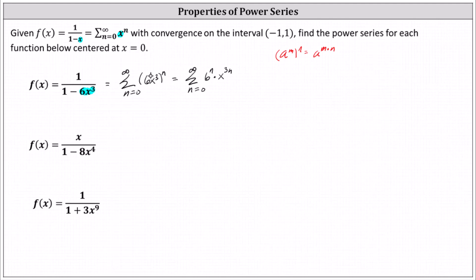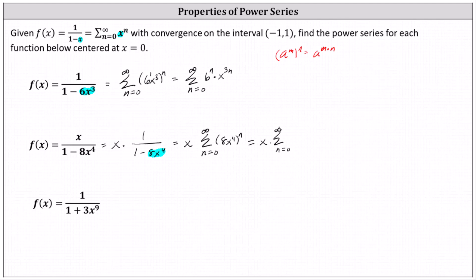For the second example, we have f of x equals x times one minus eight x to the fourth. Notice the denominator is in the correct form, but we have this extra factor of x in the numerator, and therefore we have to write the given function as x times one divided by the quantity one minus eight x to the fourth. Now for the given power series, we'll substitute eight x to the fourth for x, but then we'll also have to multiply the power series by this factor of x. So this function is equal to x times the sum from n equals zero to infinity of the nth power of eight x to the fourth.